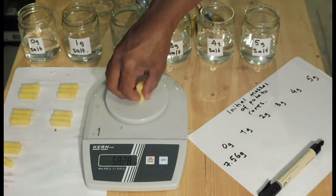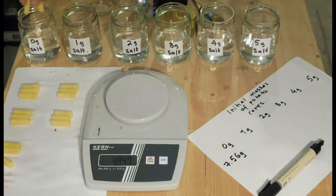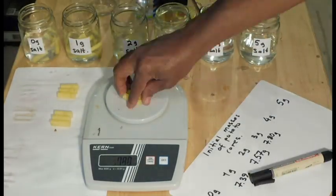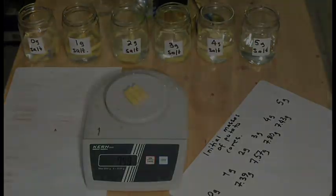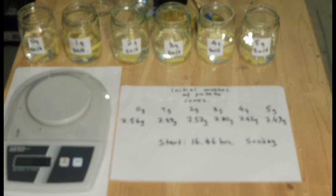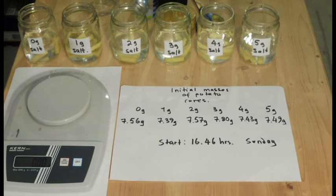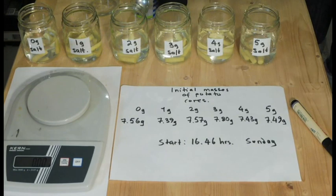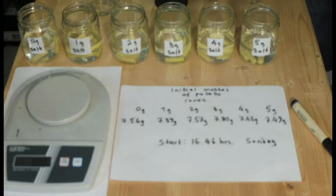And immediately, place the core set into the first jar with 0 gram salt. Now we have all our cores inside salt solutions. And importantly, the initial mass has been recorded. The experiment will be left for 24 hours under suitable unchanging conditions, such as room temperature. This is one of our controlled variables, or sometimes it is referred to as a constant variable.